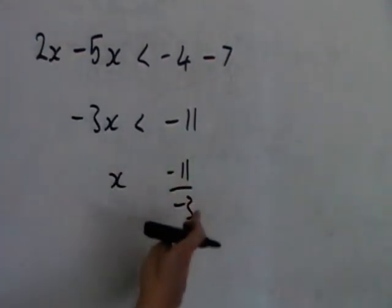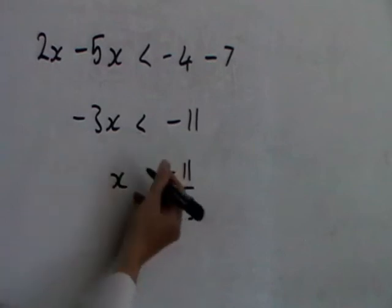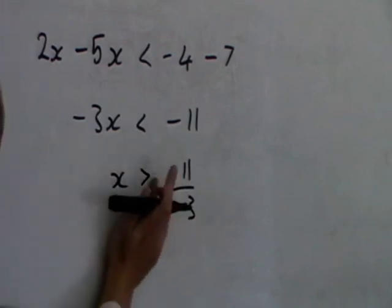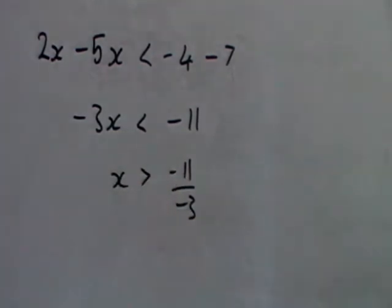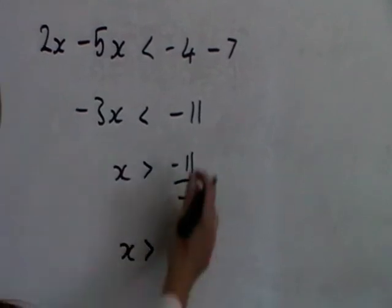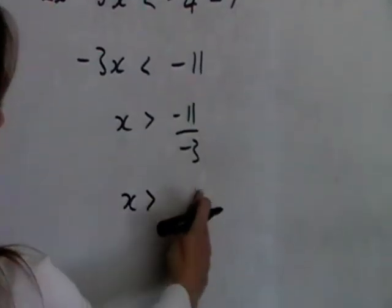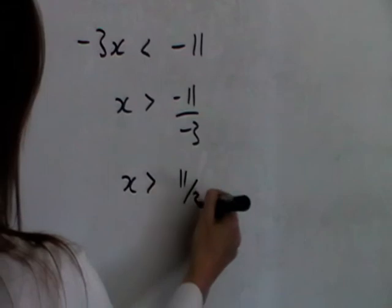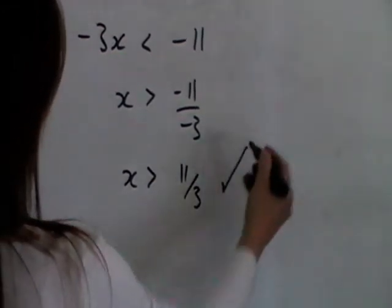Now here we are dividing by a negative number, so we reverse the sign. And then simplify the right hand side, a negative divided by a negative is positive, and we can just leave it as 11 thirds, and that is your final answer.